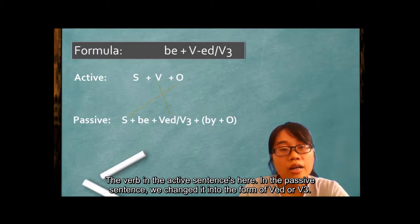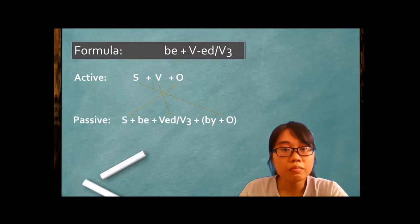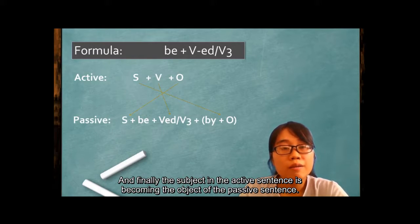The verb in the active sentence, here in the passive sentence, we change it into the form of verb ED or the past participle of the verb. And finally, the subject in the active sentence is becoming the object of the passive sentence.